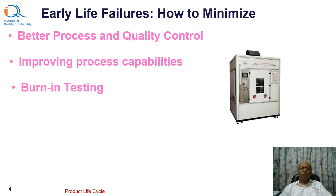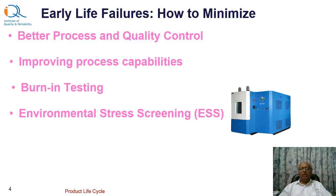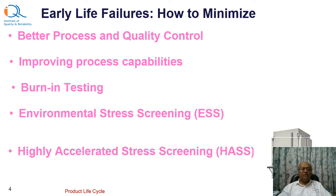Burn-in testing is a production process and 100% of product goes through it. A more rigorous idea of testing is environmental stress screening, or ESS. The furnaces can be more sophisticated. ESS cycles typically include rapid thermal cycles, random vibrations, and other cycles so that defective products get screened out and actually fail during ESS cycles. Further to ESS, there is a more rigorous testing method called highly accelerated stress screening, or HASS. HASS is similar to ESS but the cycles are more rapid and faster, and again 100% of product goes through HASS testing.